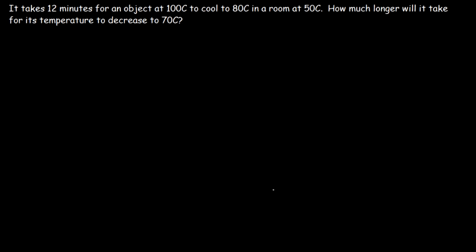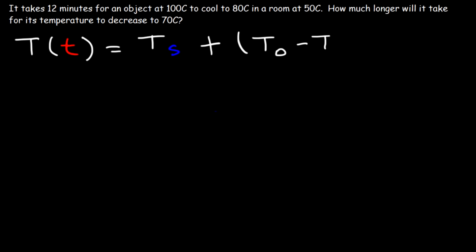There's an equation that will help us answer this question. The temperature at any time t (lowercase t) is equal to the temperature of the surroundings, plus the difference between the initial temperature of the object and the temperature of the surroundings, times e raised to the negative kt, where k is a constant. T-sub-O is the initial temperature, T-sub-S is the surrounding temperature, and T(t) is the temperature of the object at some time t.